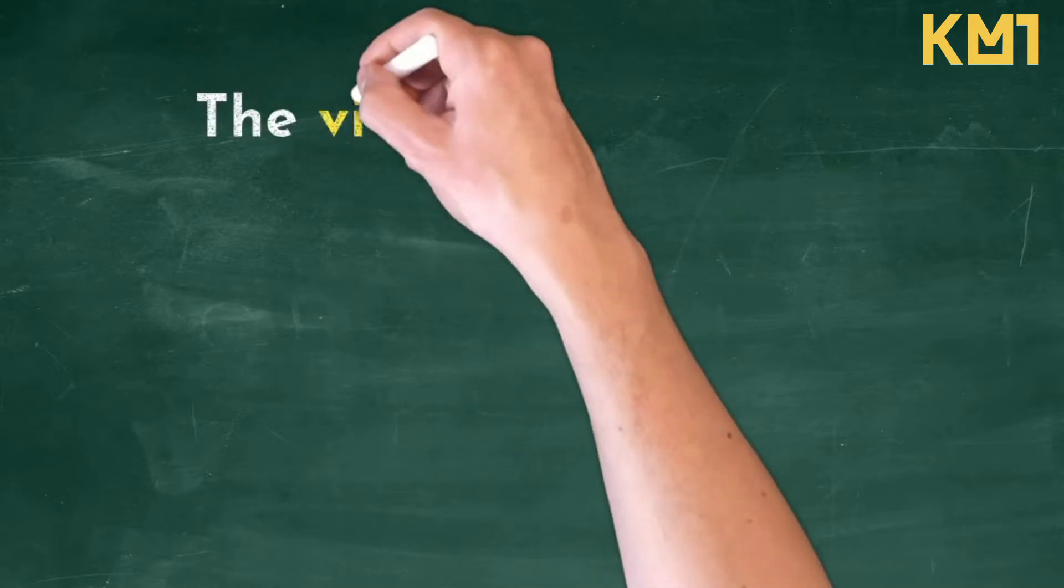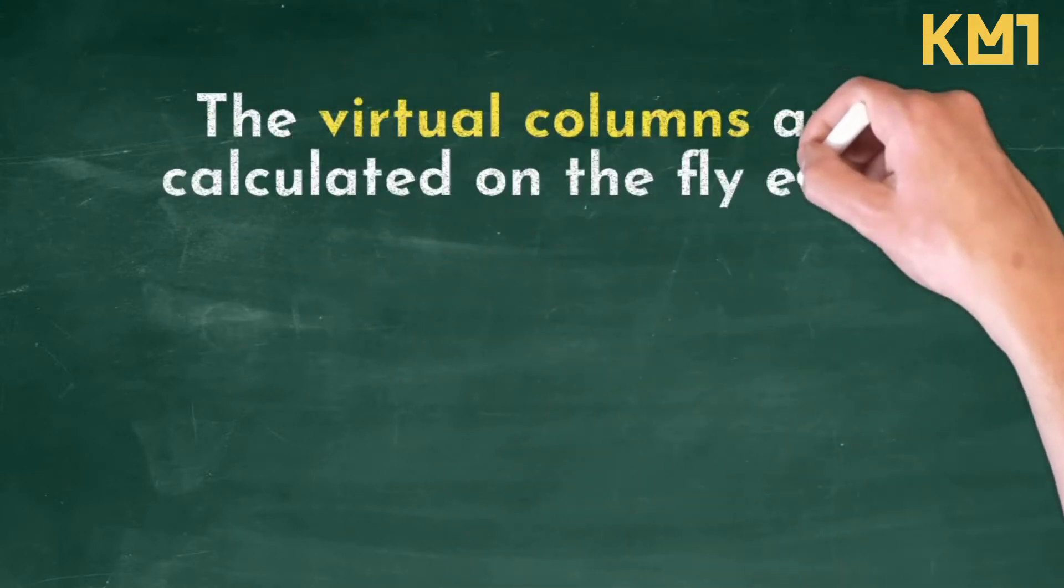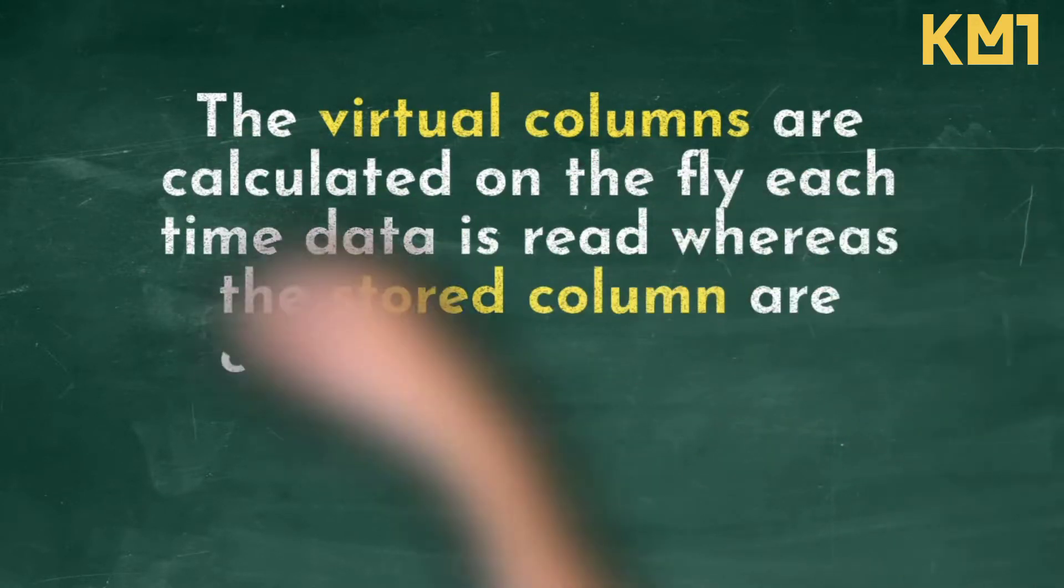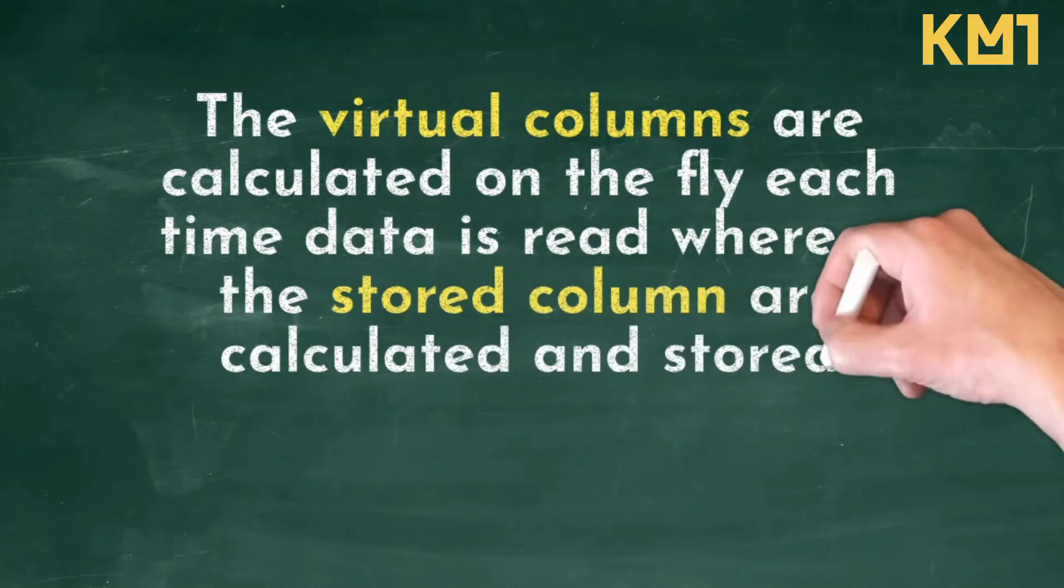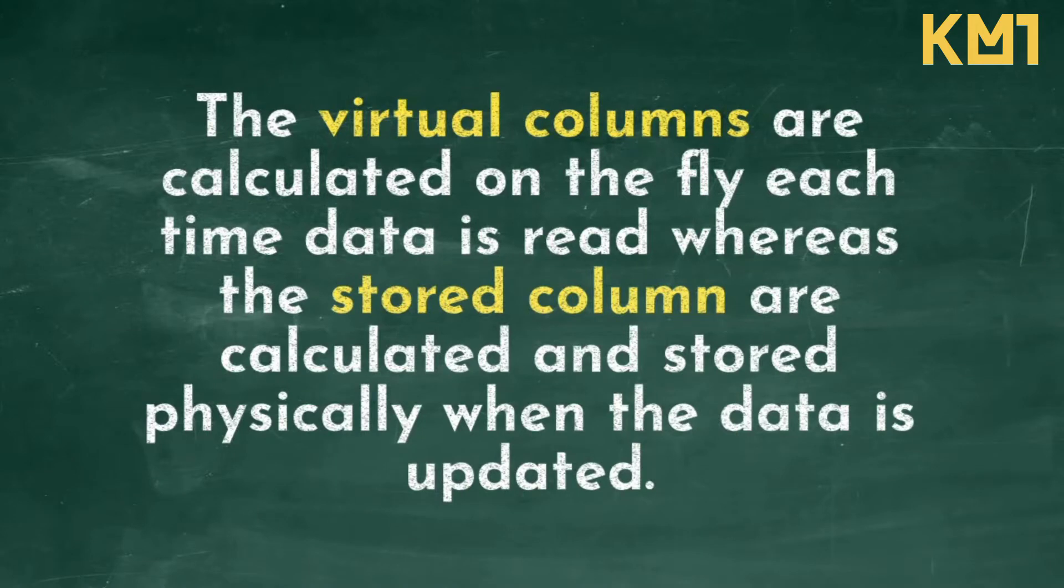By definition, the virtual columns are calculated on the fly each time data is read, whereas the stored columns are calculated and stored physically when the data is updated.